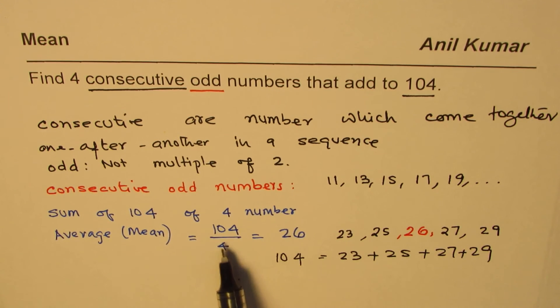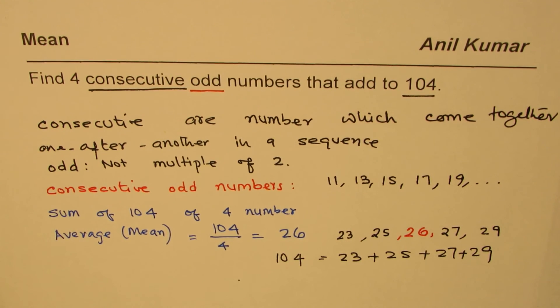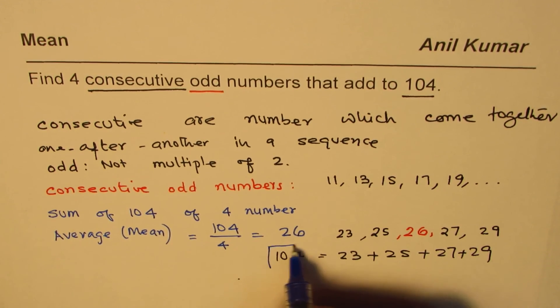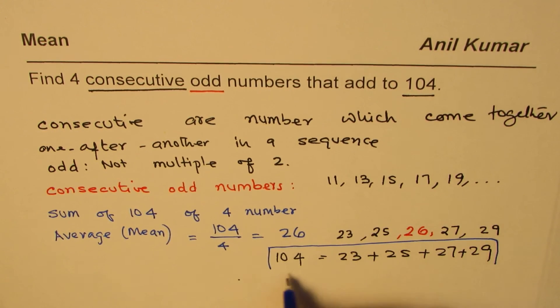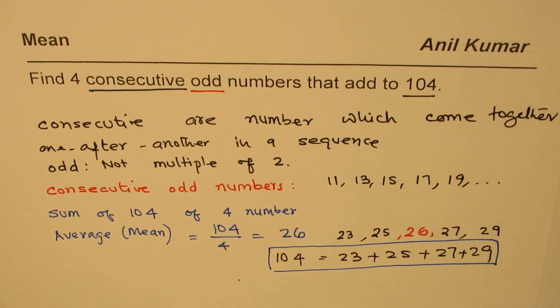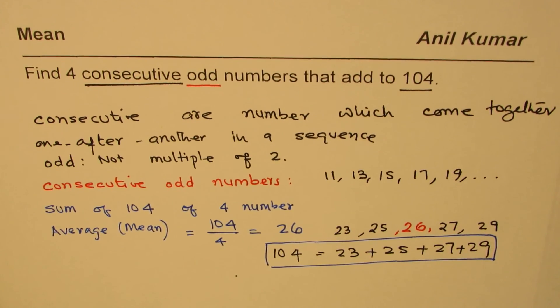The idea is, since 26 is the average of these four numbers, 26 times 4 is going to give me 104. So that helped me to find the solution. I hope you understand and appreciate this concept and also understand how we can use average or mean in some applications. I'm Anil Kumar. You can always share and subscribe my videos. Thank you and all the best.